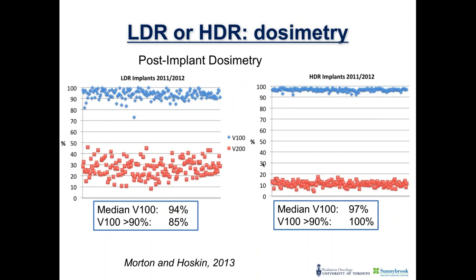An example of our dosimetry: on the left are consecutive LDR implants at Sunnybrook over two years, on the right are HDR implants over the same period. The LDR implants had a median V100 of 94%, but 15% fell below a V100 of 90%, with a large standard deviation. HDR shows much tighter standard deviations around V100 and V200, demonstrating greater consistency of dosimetry with HDR than LDR.